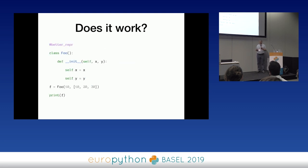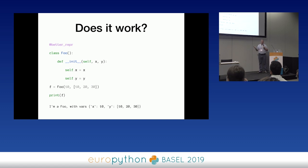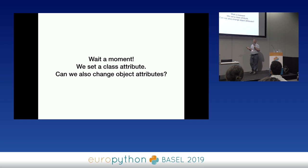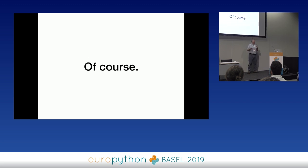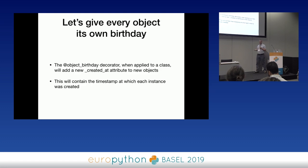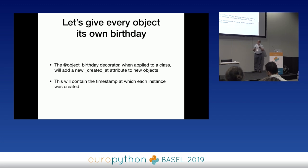Does it work? I define foo where foo gets x and y, set f = foo(10, 20, 30), print f — it prints my fancy repr. I can apply @better_repr to whatever class I want. So we set a class attribute. Can we also change object attributes? Of course — it's Python. I want to give every object its own birthday. I'm going to create the @object_birthday decorator, and when I apply it to a class, every object automatically gets a _created_at attribute of when it was created.